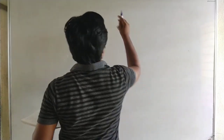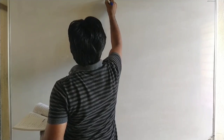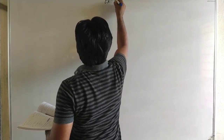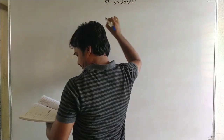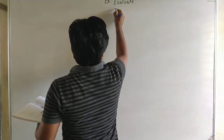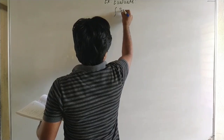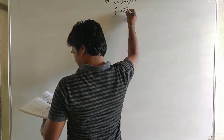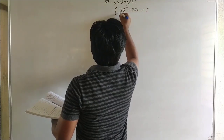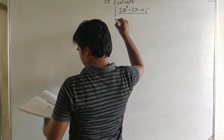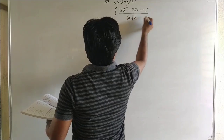Evaluate the integral of 3x cubed minus 2x plus 5 upon x into under root x dx.